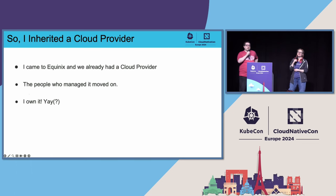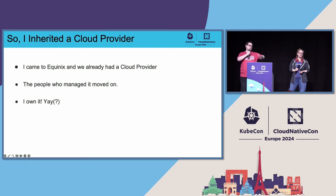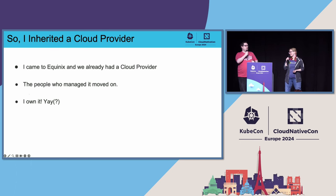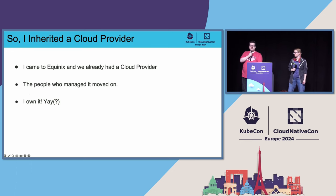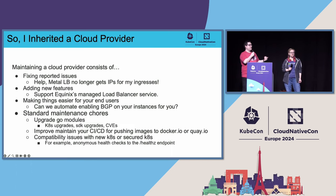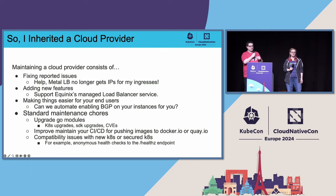Why did Chris contribute it? He came to Equinix Metal to work under leaders in the cluster API and cloud provider space, but those people left within six months. He looked around and realized he was now the Kubernetes admin and maintainer of the code. He had to figure out what that meant, and he spent time doing so in order to share it with others who might find themselves suddenly maintaining a cloud provider.